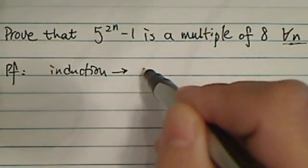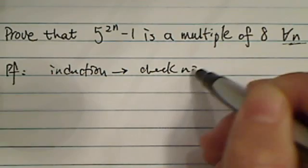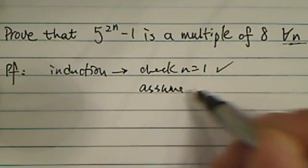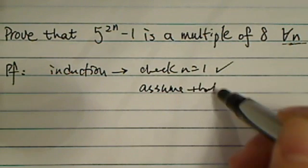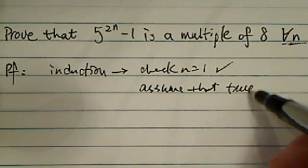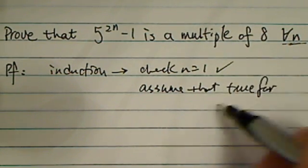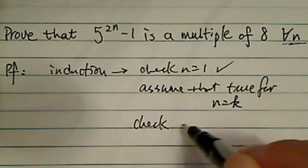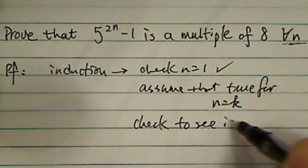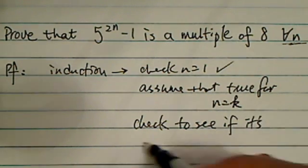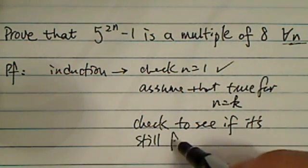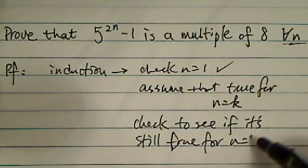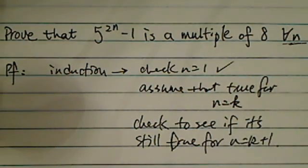Induction has three steps. You've got to check when n equals 1 is true, and then you assume that this is true for n equals k, and then you need to check to see if it's still true for n equals k plus 1. So that's the steps.